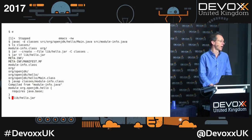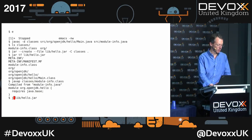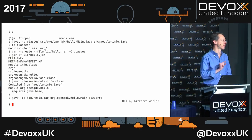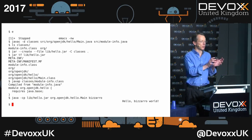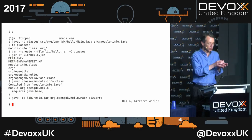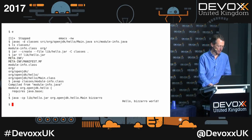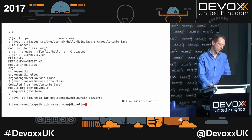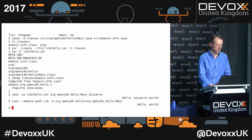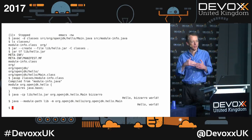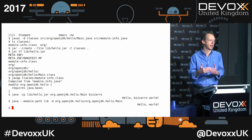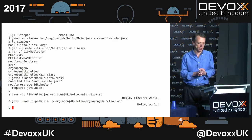This hello.jar can actually run on the class path — the module-info file is ignored in that case. But I can also treat the lib directory as the module path, where you put actual modules — jar files that have module-infos in them. With 'java --module-path lib', I tell it what module I want to run: org.openjdk.hello, and what class in that module to run. It is sort of the first baby step — we just took that simple Hello World app and it's now a module.